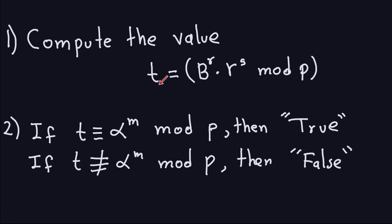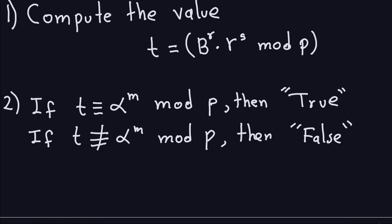If T, this number, happens to be equal to this modular exponentiation, then the output of the algorithm is true. What that means is the actual signature corresponds to the actual message that was sent. And if that is not the case, then false means that the signature is not valid, or it does not correspond to that message.